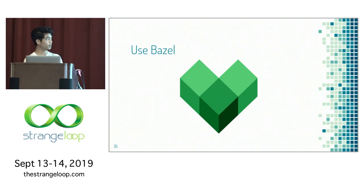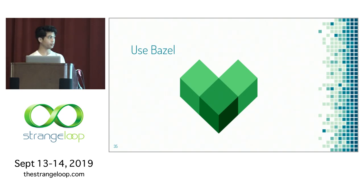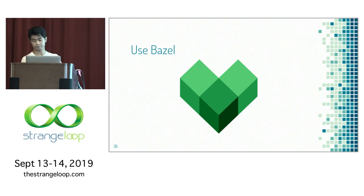It's called Bazel, built by Google. Using Bazel, they do all that stuff for you, and if you use Bazel it comes out with a deterministic Docker image where the Docker digest is exactly the same if you give it the exact same input.